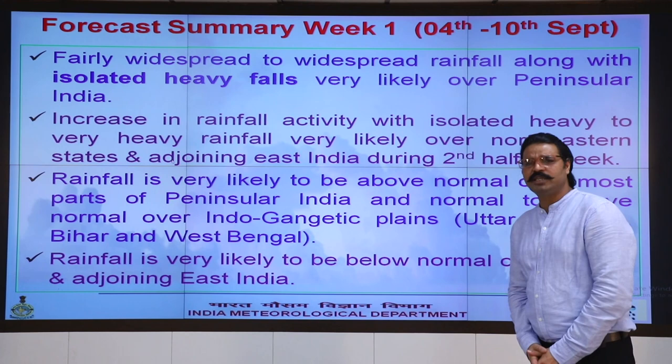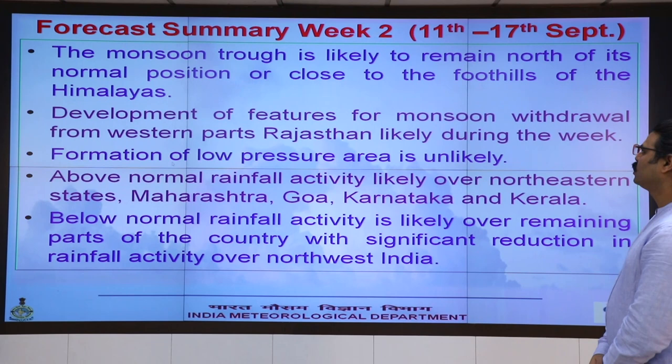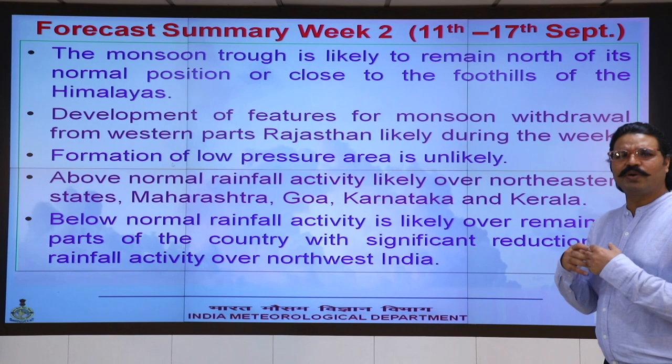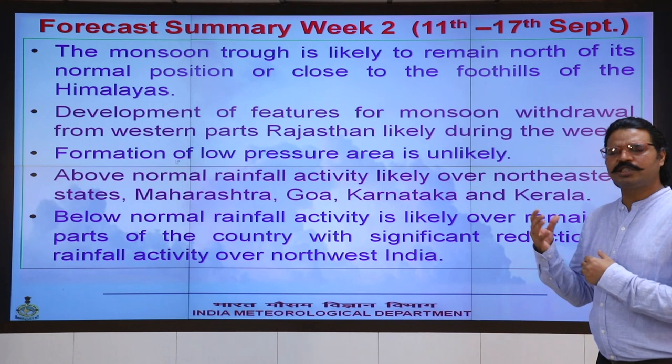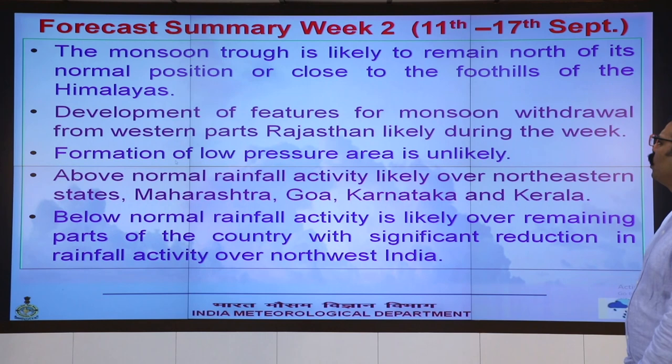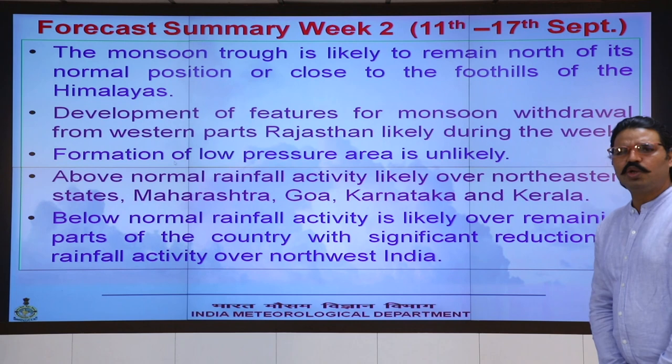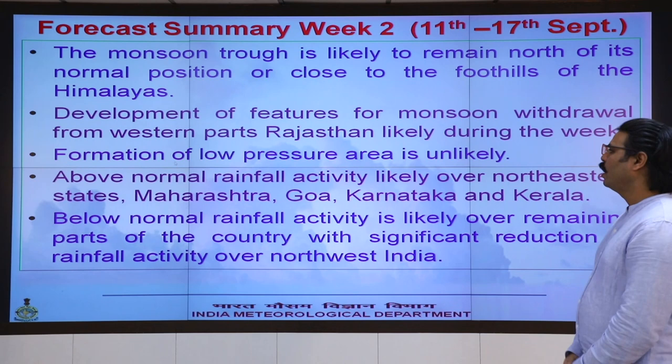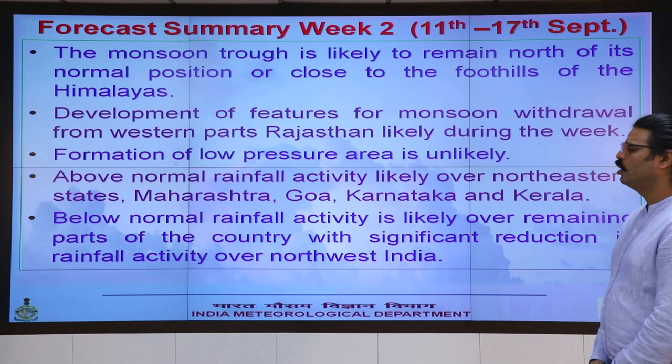For the second week, the monsoon trough is likely to remain north of its normal position or close to the foothills of the Himalayas, causing reduced rainfall over northwest India. Development of features for monsoon withdrawal over western Rajasthan is likely, due to the probable formation of an anti-cyclonic circulation over west Rajasthan and neighbourhood. The formation of new low pressure areas is also unlikely.